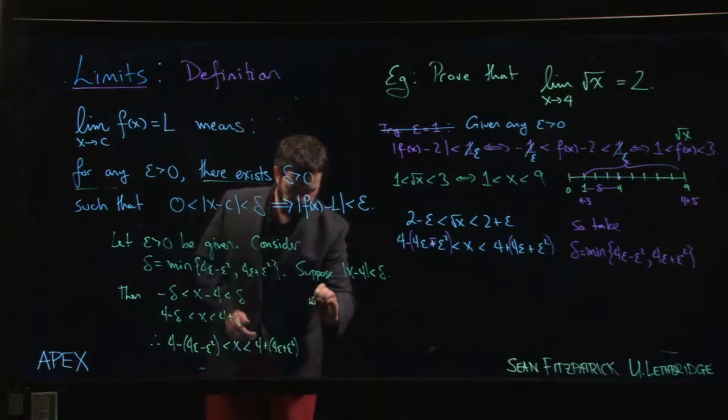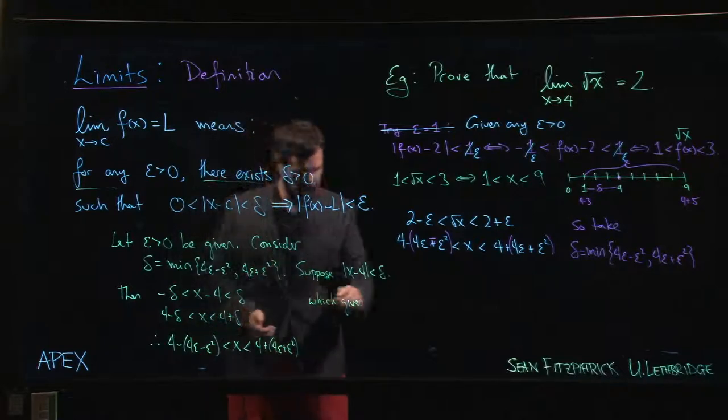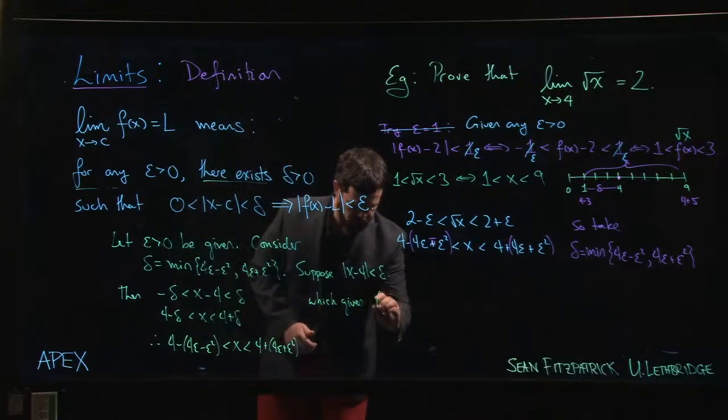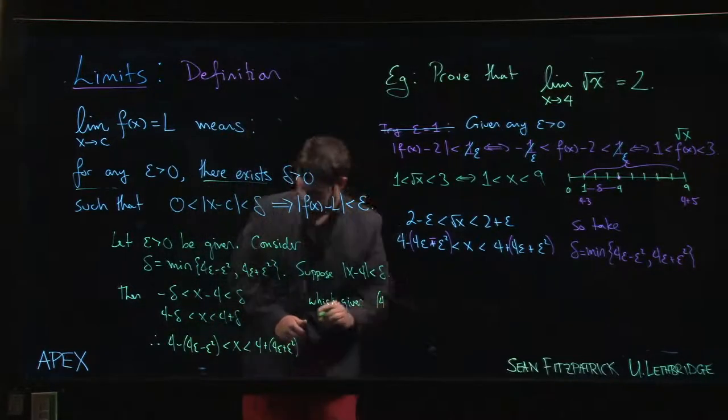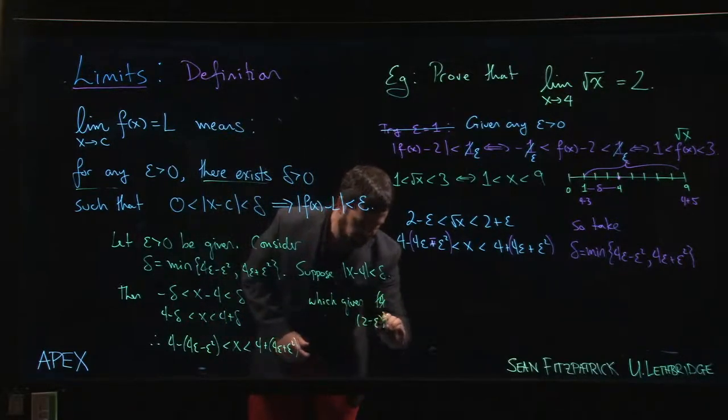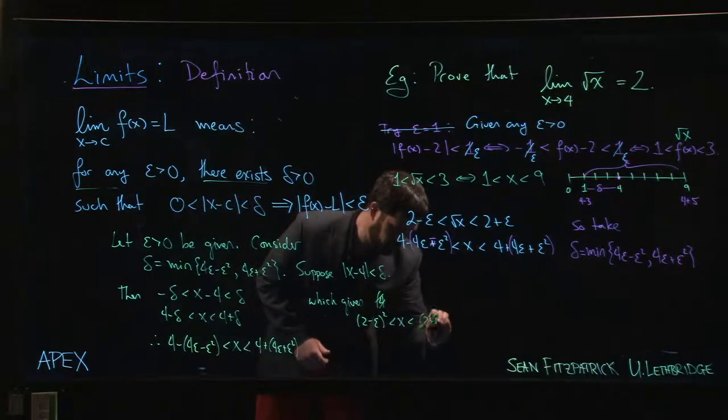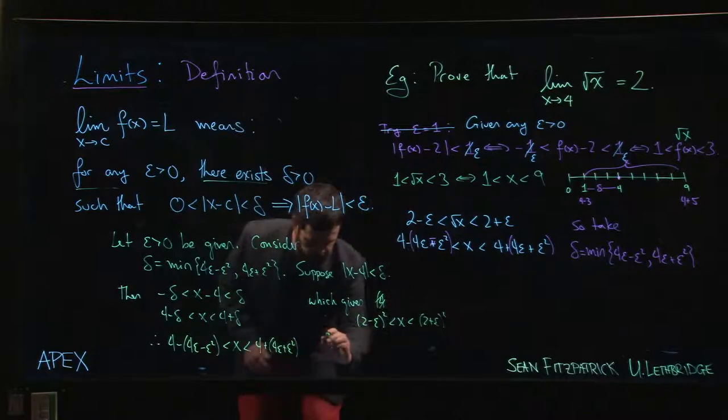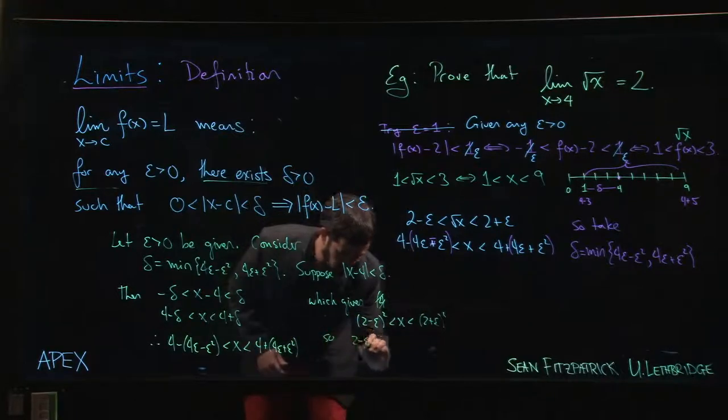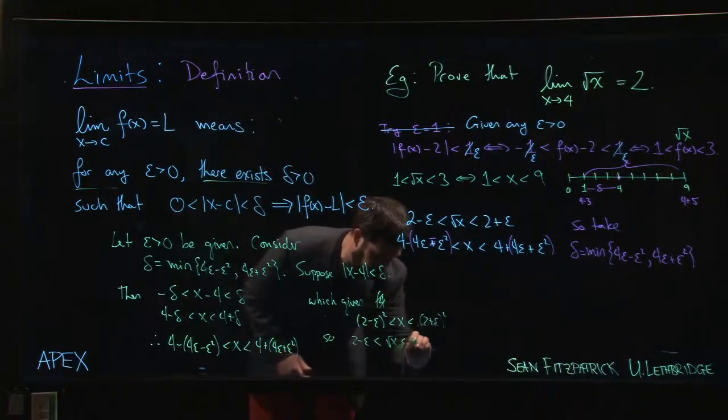And then we can say, well, that gives me that 2 minus epsilon squared less than x, less than 2 plus epsilon squared. So 2 minus epsilon less than root x less than 2 plus epsilon.